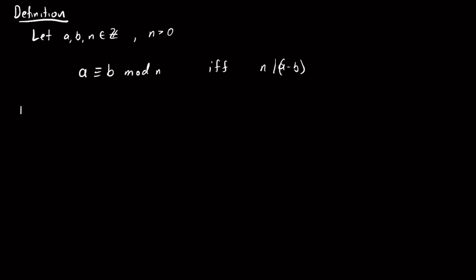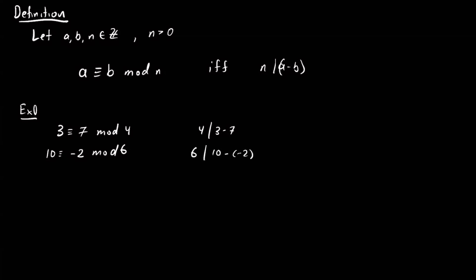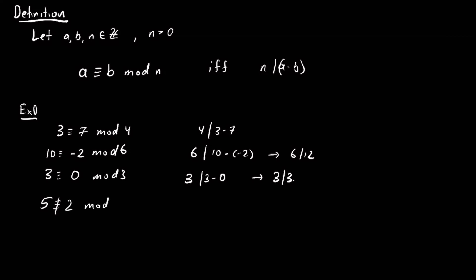So what are some examples? We can say, for example, that 3 is congruent to 7 modulo 4, since 4 divides 3 minus 7 — that is, 4 divides negative 4. We can say that 10 is congruent to negative 2 mod 6, because 6 divides 10 minus negative 2, which is saying that 6 divides 12. We can say that 3 is congruent to 0 modulo 3, because 3 divides 3 minus 0, i.e., 3 divides 3. We might also notice that 5 is not congruent to 2 modulo 6, since 6 does not divide 5 minus 2 — 6 does not divide 3.